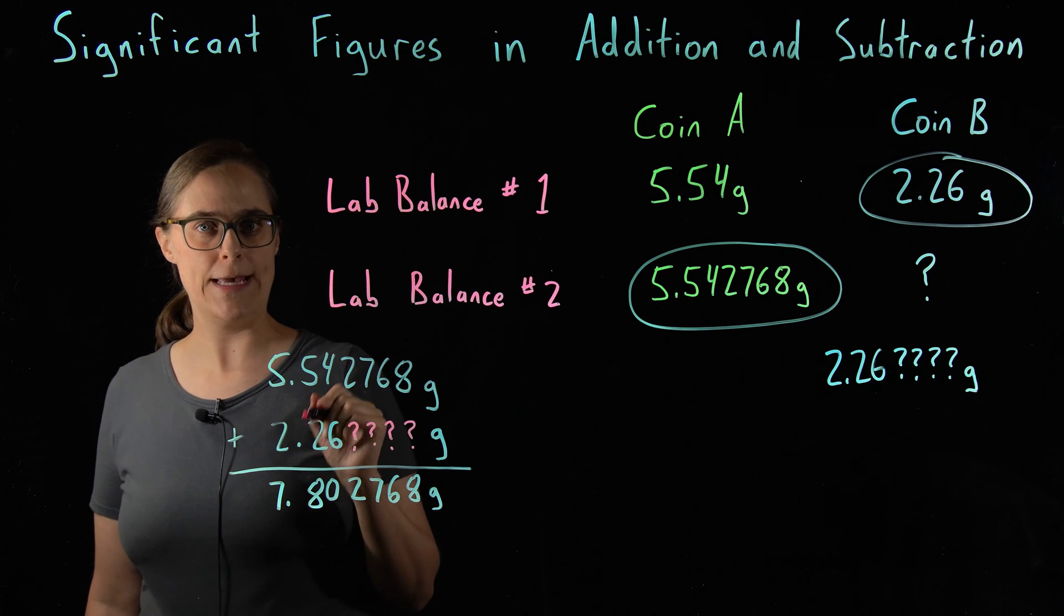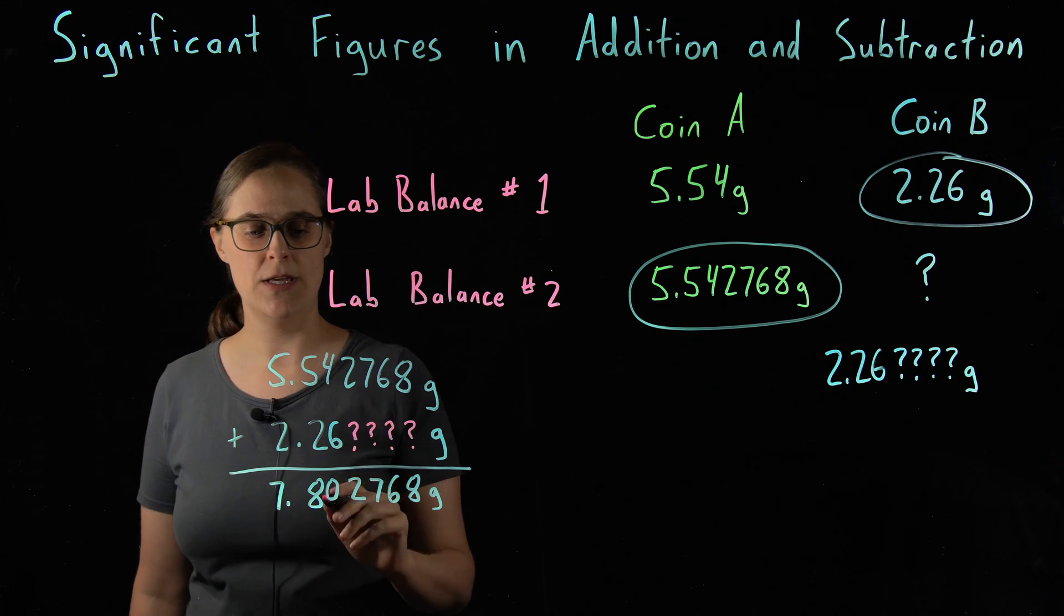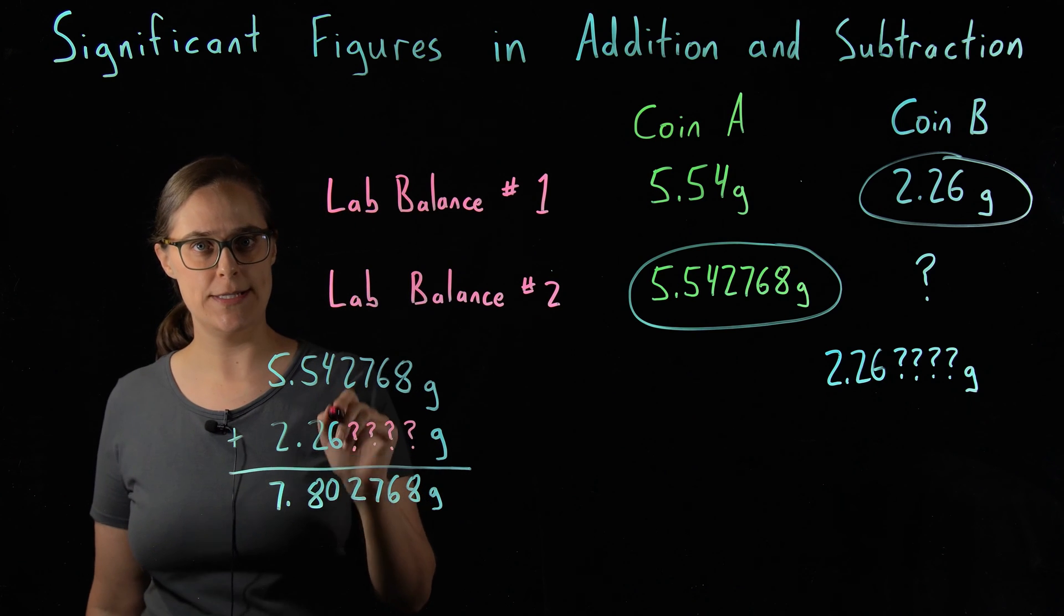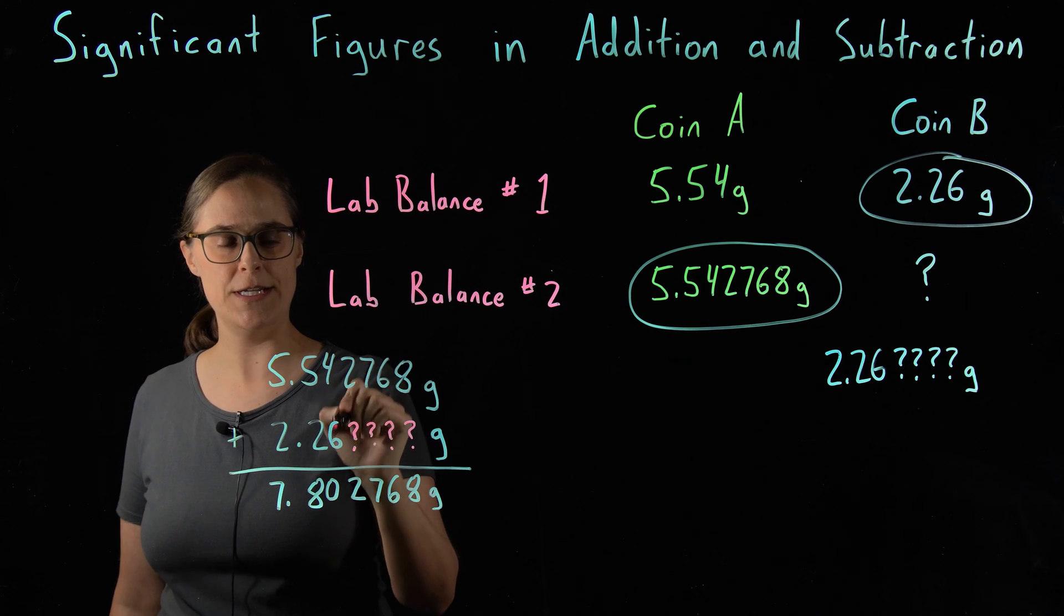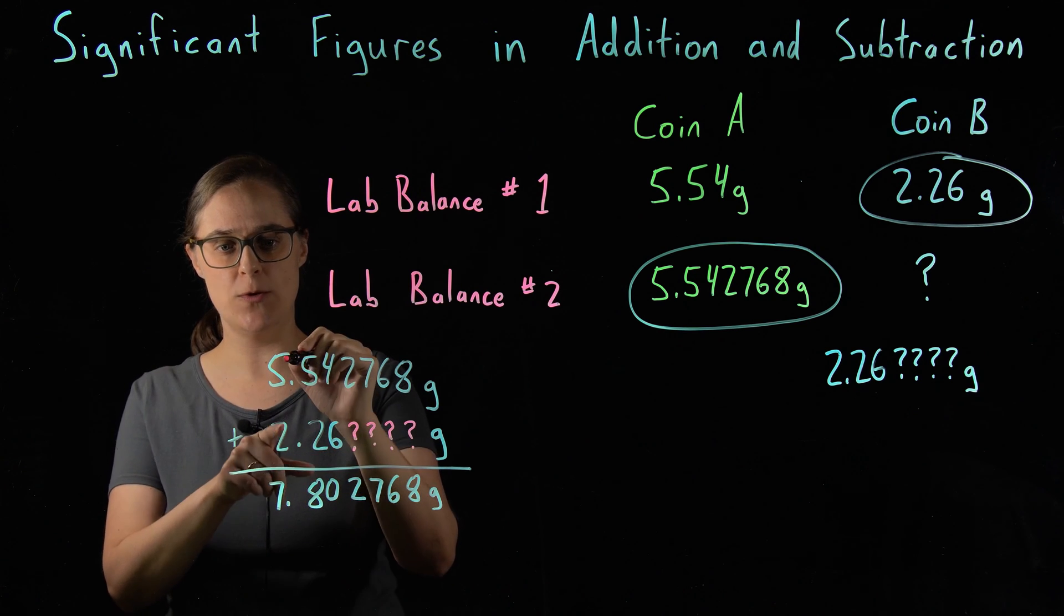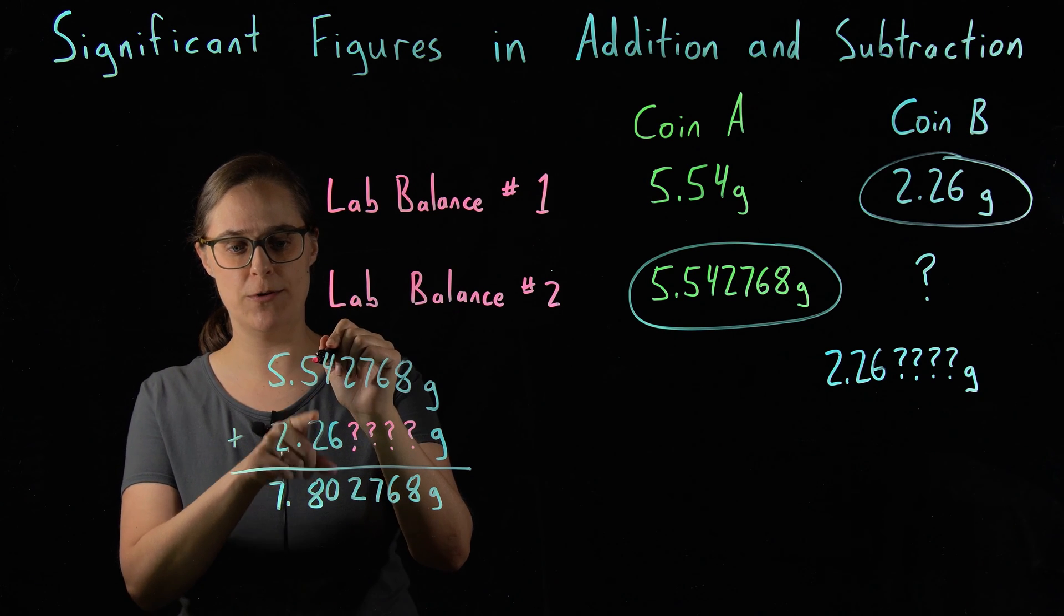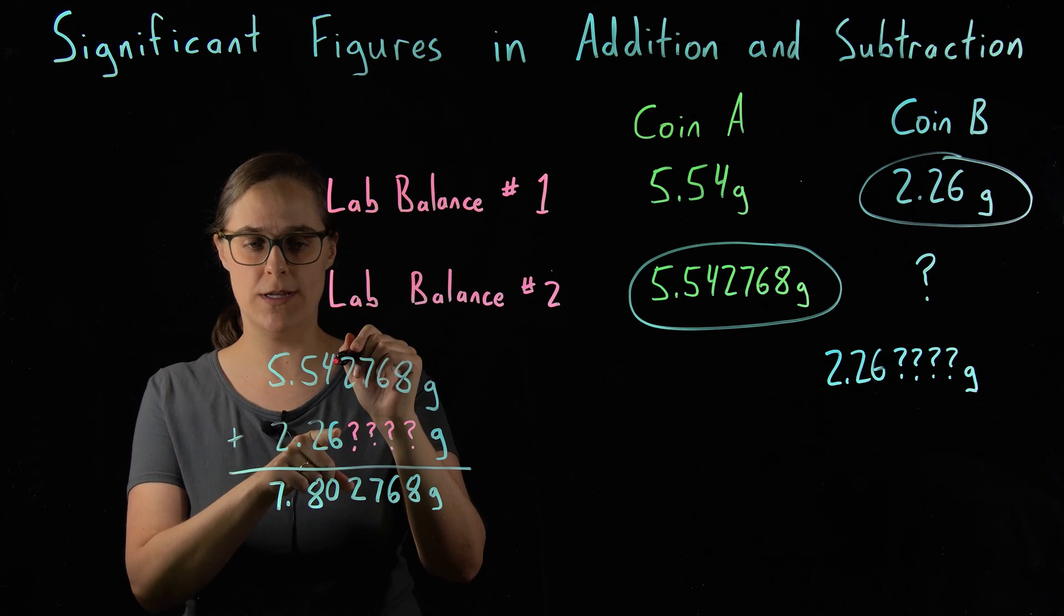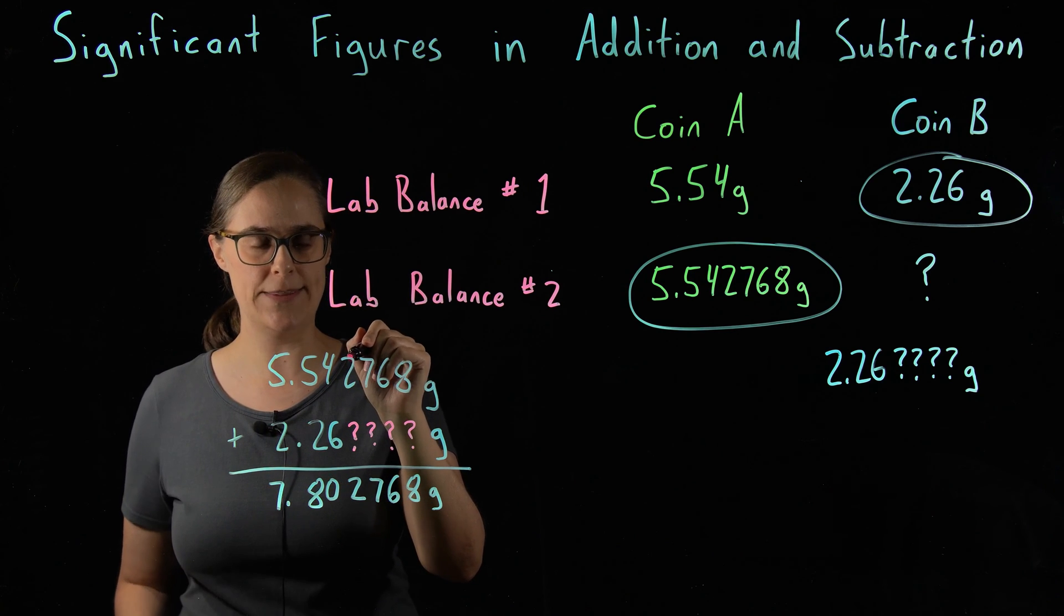So, our rule had to do with digits before and after the decimal place. We only know digits in our answer if we knew starting numbers in that decimal place. So the ones place, we know both the 5 and the 2. The tenths place, we know both the 5 and the 2. The one hundredths place, we know both the 4 and the 6.